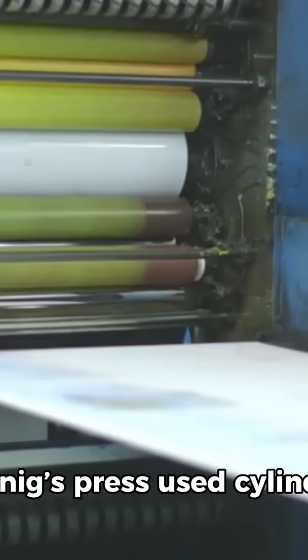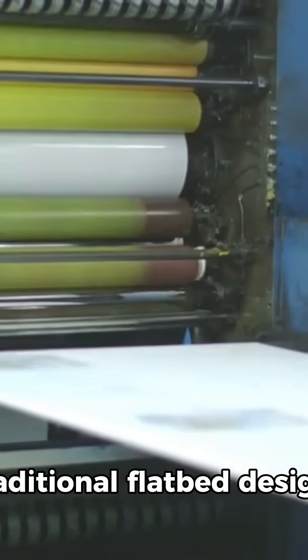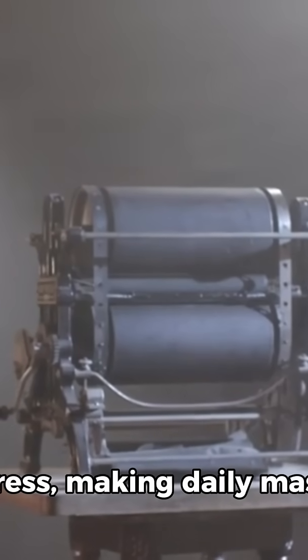Koenig's press used cylinders to transfer ink onto paper more efficiently than the traditional flatbed design. The Times of London was the first newspaper to use this press,